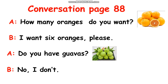Now we change. I choose B — all of you are A, okay? Yes, now I'll count. One, two, three. I want six oranges, please. No, I don't. Okay, everyone, can you practice? Good. You can practice at home.